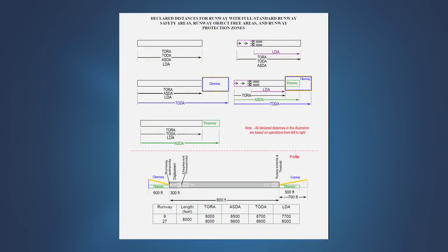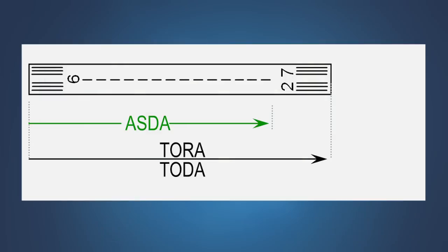Awareness of declared distances is key to ensuring accurate arrival and departure calculations. Declared distances refer to the length of runway declared usable for takeoff and landing for the purpose of airplane performance calculations. The accelerate stop distance available is the runway plus stopway length declared available and suitable for the acceleration and deceleration of an airplane aborting a takeoff.